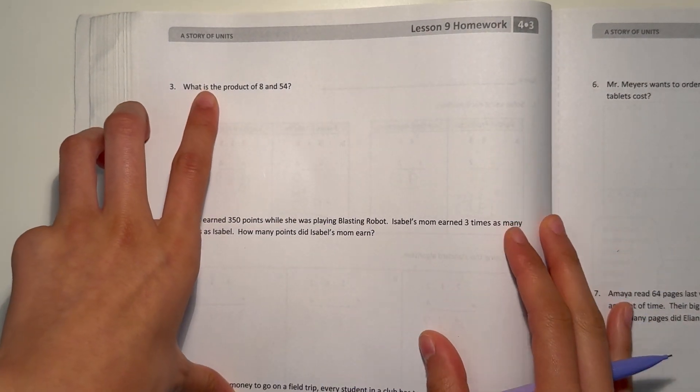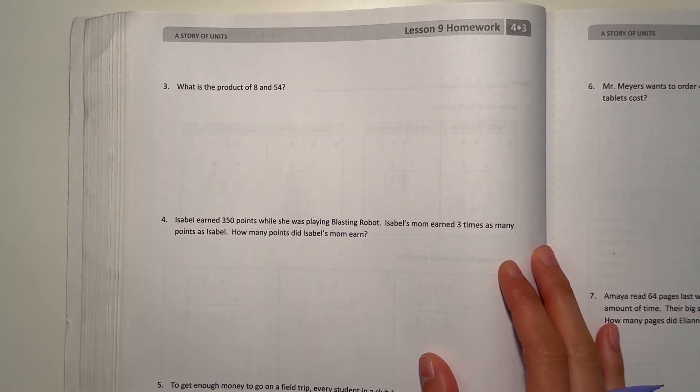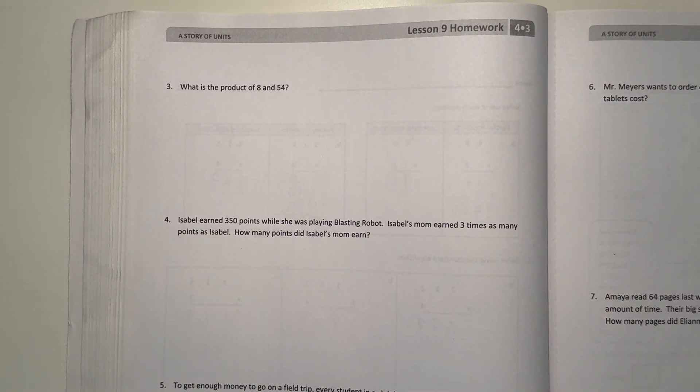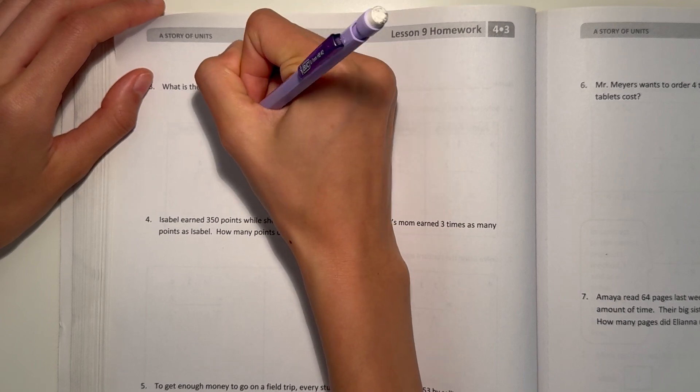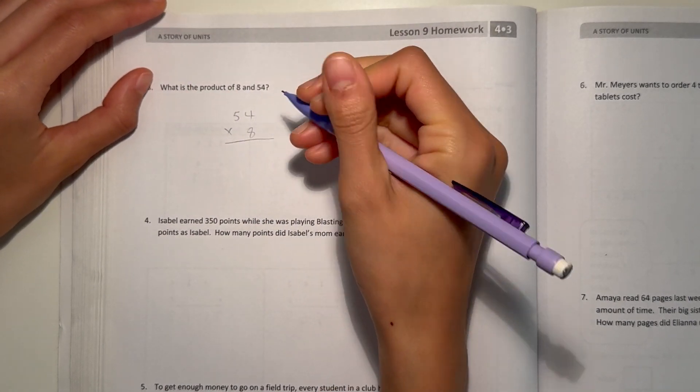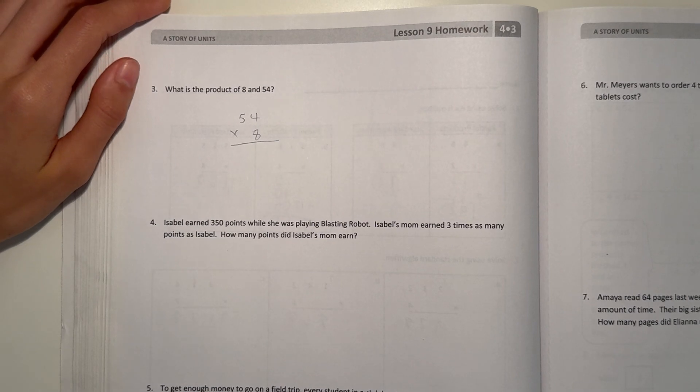Next page, number 3. What is the product of 8 and 54? The product is the answer when we multiply something, so it's asking us what's the answer to 54 times 8. Let's do the partial products way, just for practice.